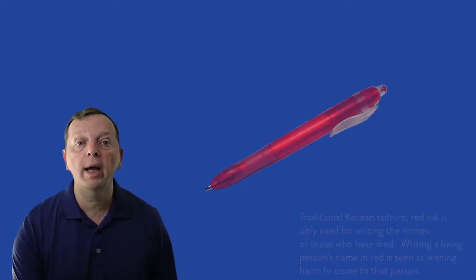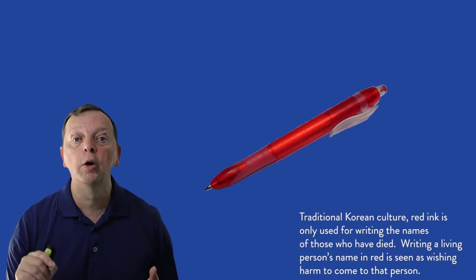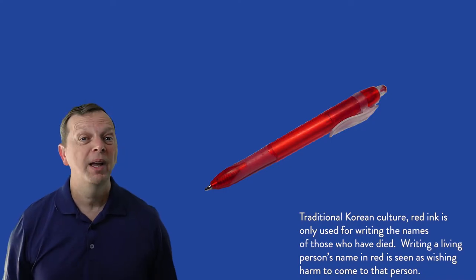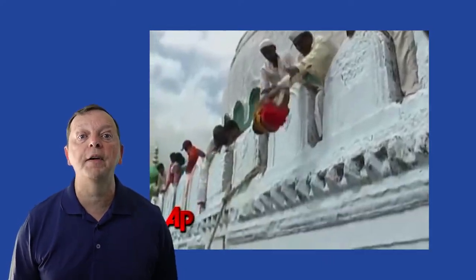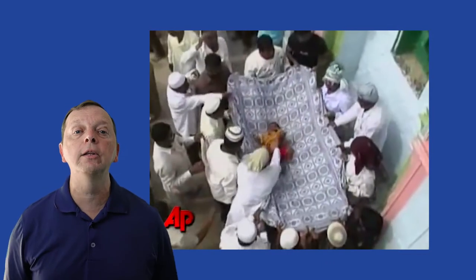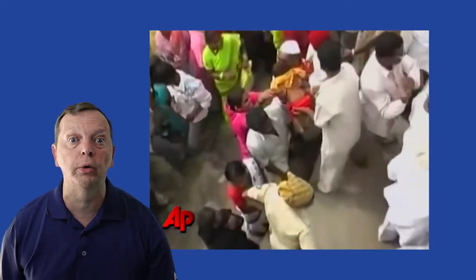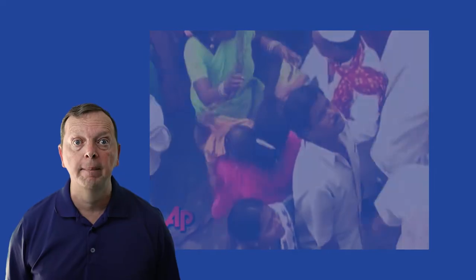Now the problem is, it's so easy to be ethnocentric. Let me give you some examples. What if I told you that some people in South Korea will not write the names of other people in red if they're still alive? Does that sound odd? Then what about the people in Karnataka, India, where Hindus and Muslims will toss babies off of a 30-foot-high balcony into blankets held by villagers below in order to bring the children good health and good luck?